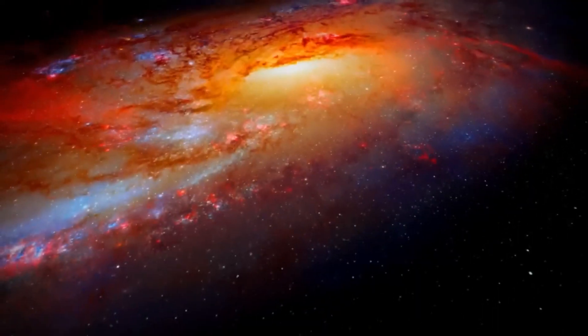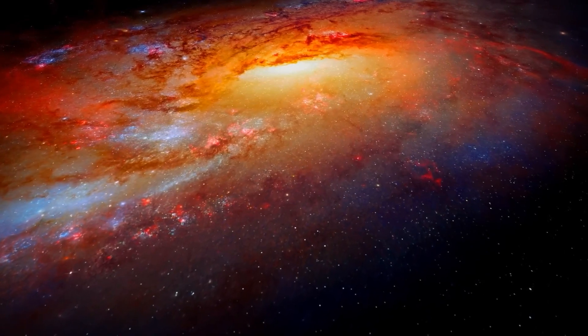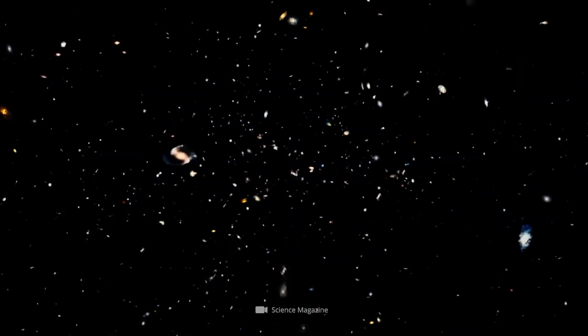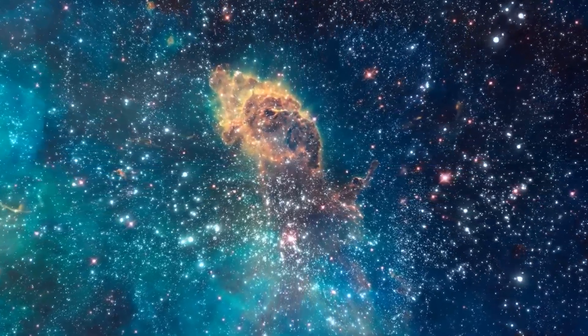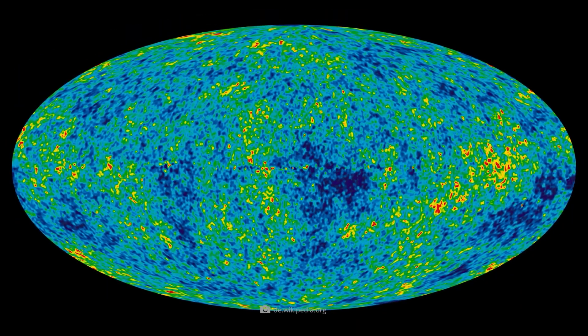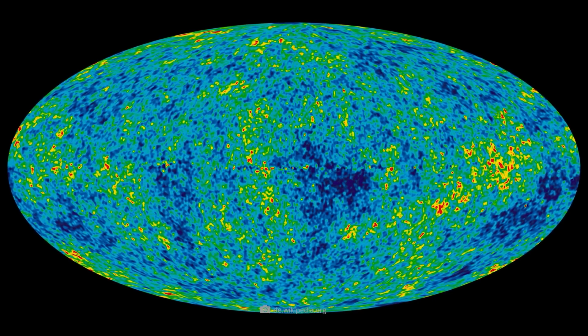The Big Bang model describes the observable universe's evolution. It was derived from observation and theory. It shows how the universe came into existence from a dense, hot condition. This model explains the quantity of light elements, large-scale structure, and cosmic microwave background.